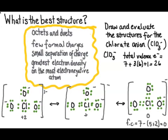If we look at our optimizing procedure here, we still have octets and duets. We've made the formal charges smaller by removing those all for one, except for one, which we knew we were going to have to begin with. We have a small separation of charge, no longer any positive charges. The greatest electron density is on oxygen, which is more electronegative than chlorine. So we're all good here on our rules so far. So that seems to be our best structure.